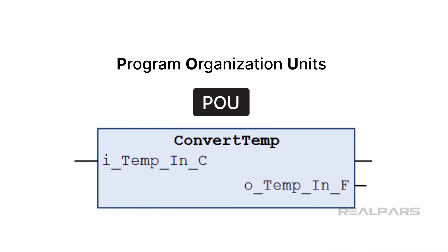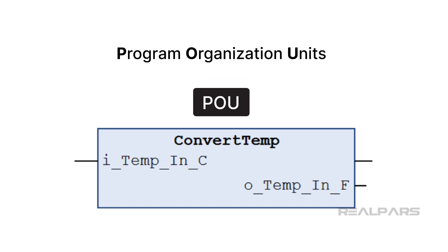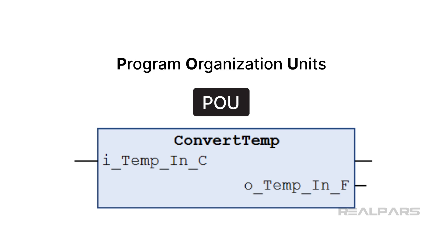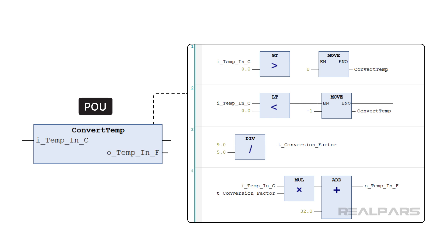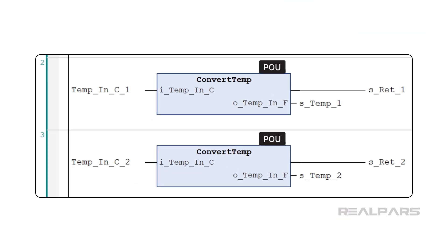In this course, you will learn how to build PLC projects using Program Organization Units, also known as POUs. A POU is a container that encapsulates a piece of code and can be called one or more times in a project. POUs enable you to structure your projects in a logical way, and to write modular code that can be reused in different applications.